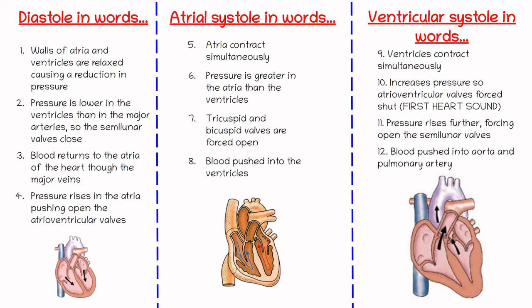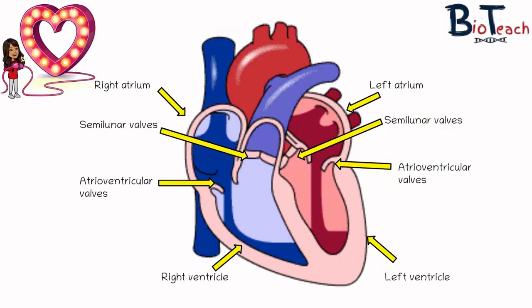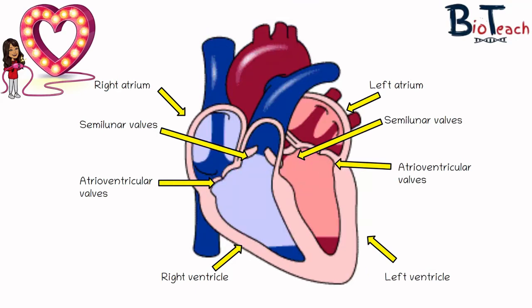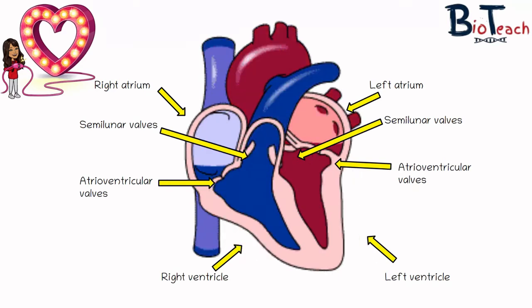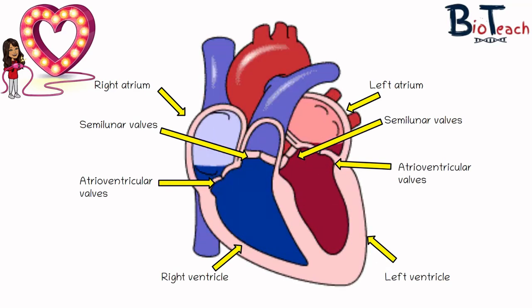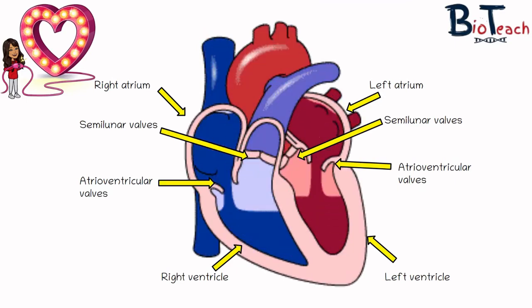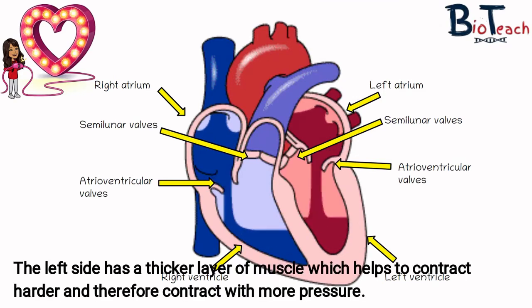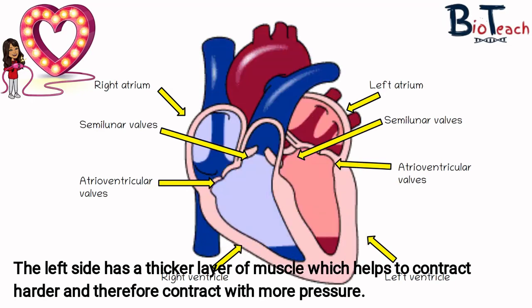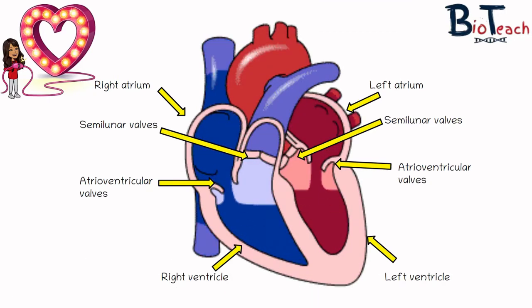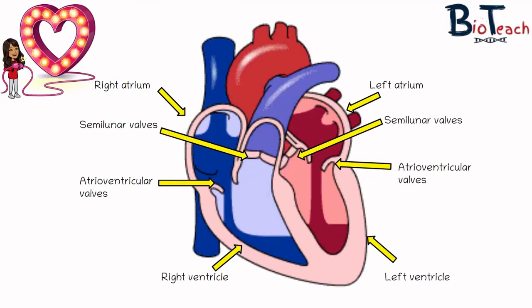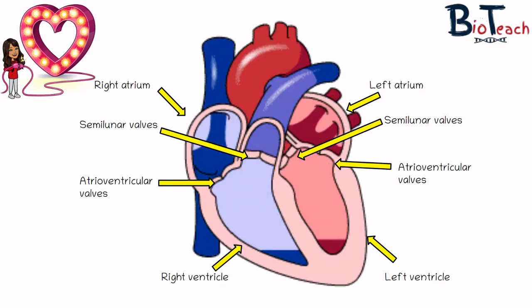This part of the video provides key words and revision aids for the cardiac cycle — please feel free to pause to write notes. The animation helps you visualise the beating heart. You can see that both atria contract at the same time, pushing blood into the ventricles, and shortly after the ventricles also contract. Note that the left side of the heart always contracts harder to create more pressure, as it pumps oxygenated blood around the body. As atrial contraction happens, the AV valves open; as the ventricles contract, the AV valves close and the semilunar valves open.